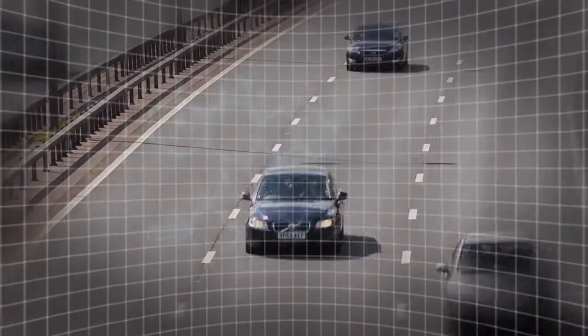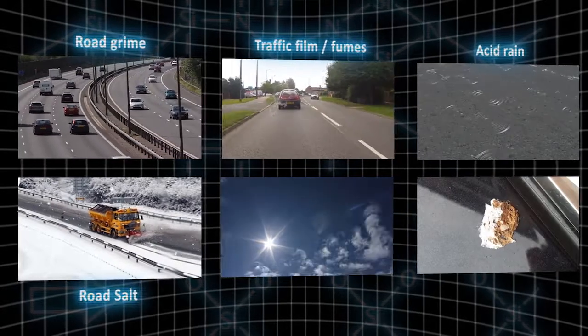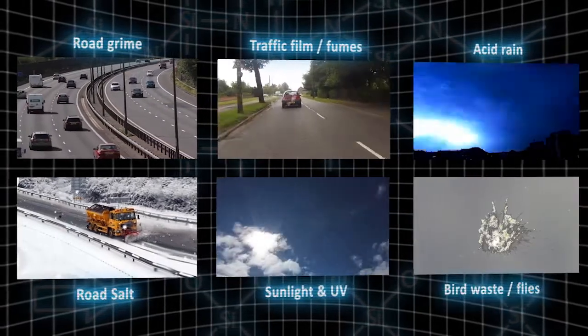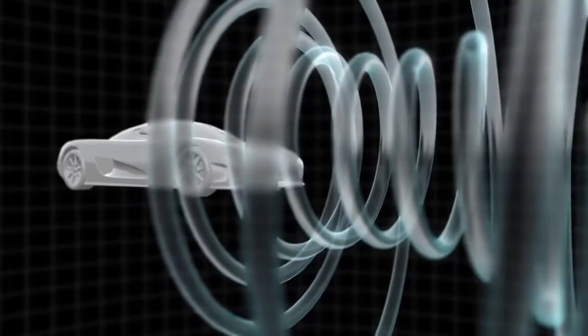Your vehicle is exposed to the damaging effects of harmful environmental elements such as road grime, traffic film, fumes, acid rain, road salt, sunlight, and animal matter. All these elements can cause damage to the exterior of your vehicle.